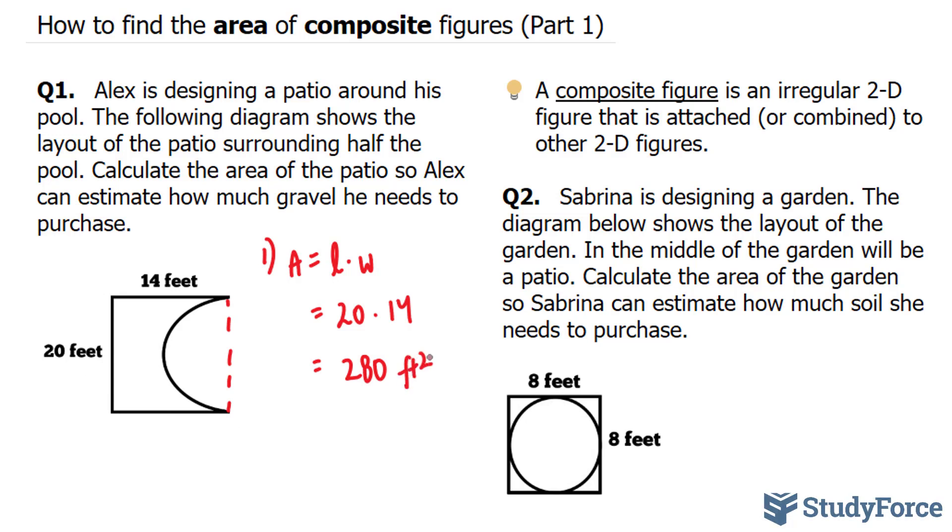The next step is to find the area of a circle and then divide it by 2. So how do we find the area of a circle? First, we'll write down the area formula for a circle. Area of a circle is equal to pi r squared.